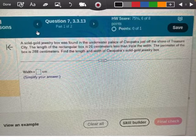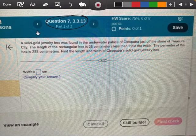This is a question out of 3.3, question number seven. It says a solid gold jewelry box was found underneath the underwater palace of Cleopatra just off the shore of Treasure City. The length of the rectangular box is 26 centimeters less than triple the width and the perimeter of the box is 288. Find the length and the width of Cleopatra's solid gold jewelry box.